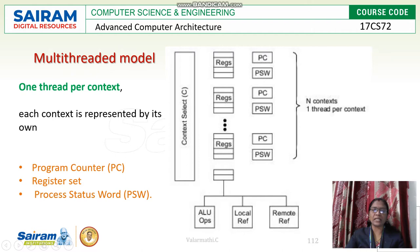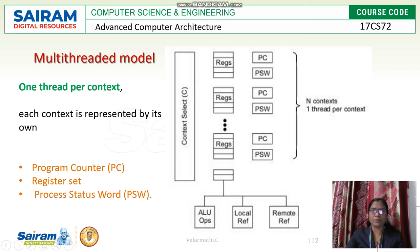Moving to the multi-threaded environment, the diagram on the right shows how it is designed. Each thread is associated with a program counter, register state, and a status word defined as PSW (Process Status Word). These three indices must be present for each thread. Here there are n contexts available, each having one thread per context, with PC (program counter) and PSW associated with a number of context selects.